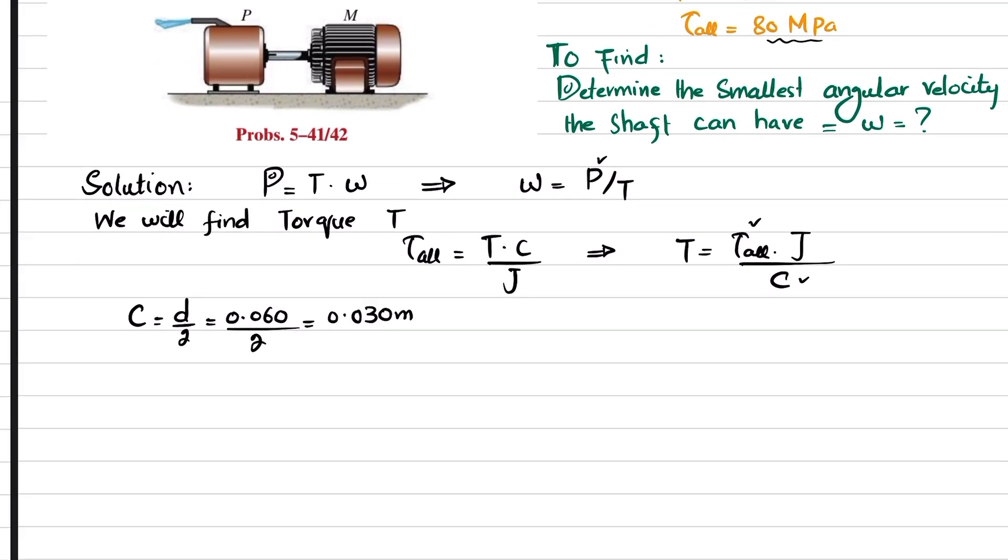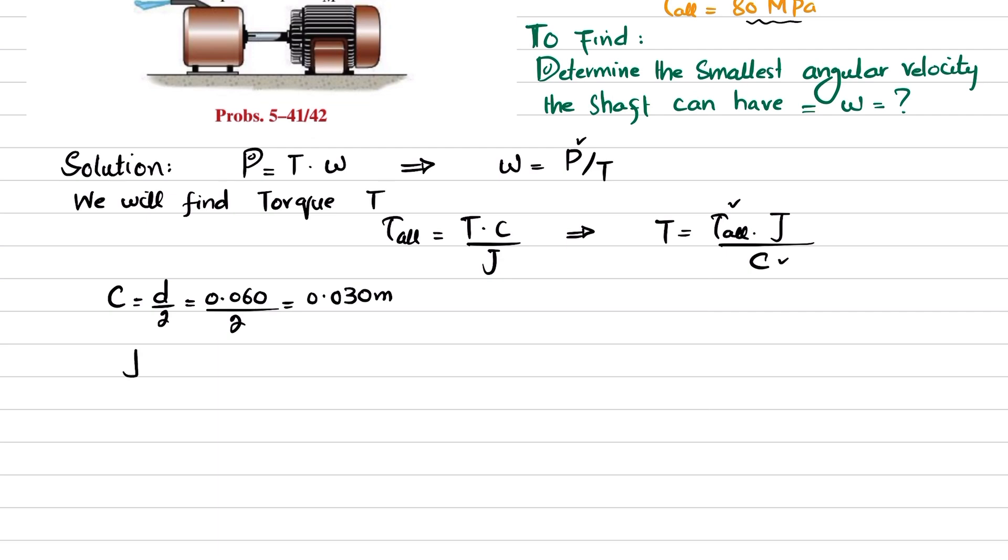We do not have J yet. J is the polar moment of inertia. For a solid shaft, J equals π over 2 times c to the power 4, so π over 2 times 0.030 to the power 4.